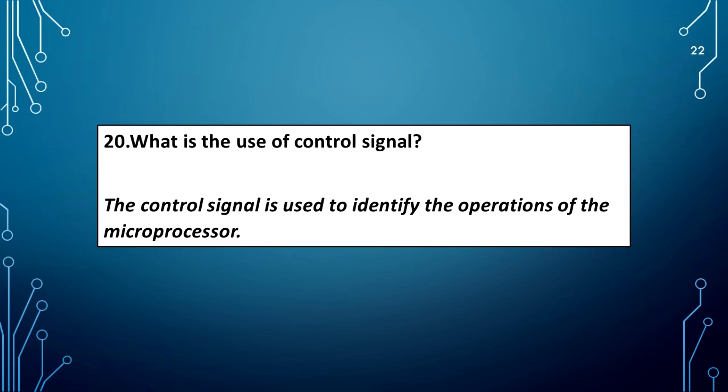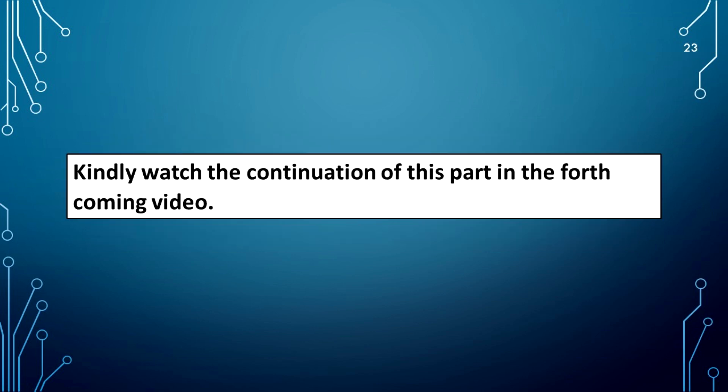What is the use of control signal? The control signal is used to identify the operations of the microprocessor. Kindly watch the continuation of this part in the forthcoming videos.